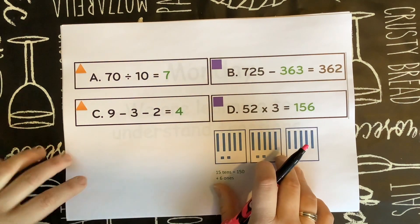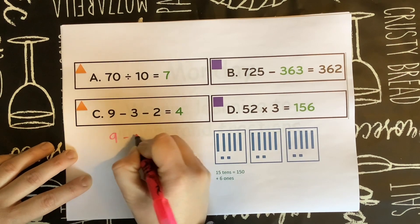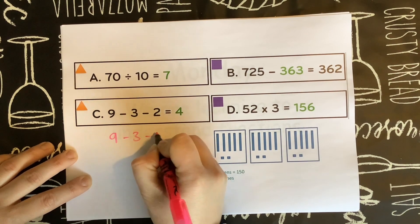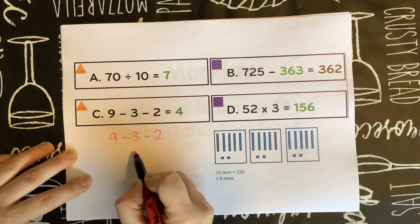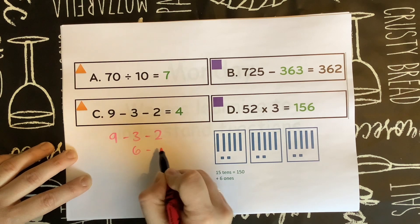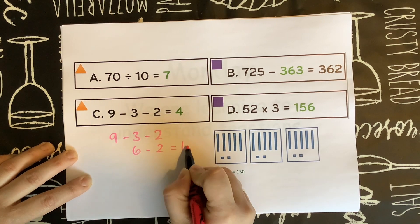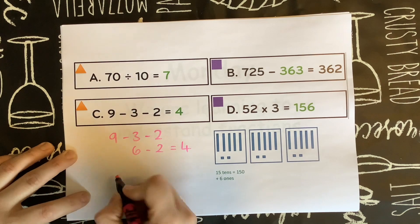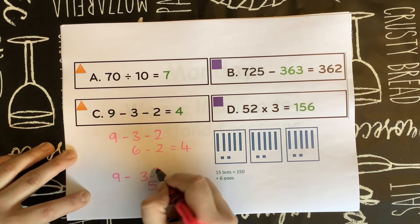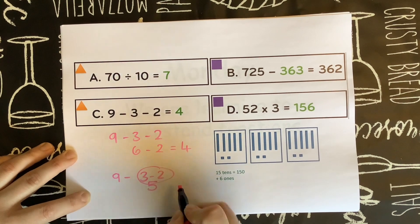Then with these ones there are multiple ways you can do this. You can either do nine take away three which gives you six and then take away two to give you four, or you can add them together to get five. Put that together — nine take away five is also four.